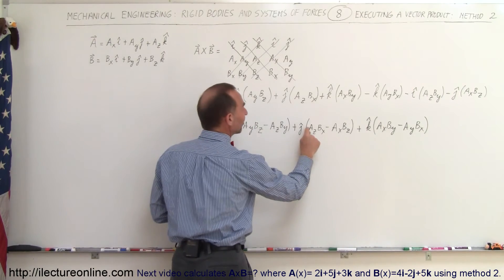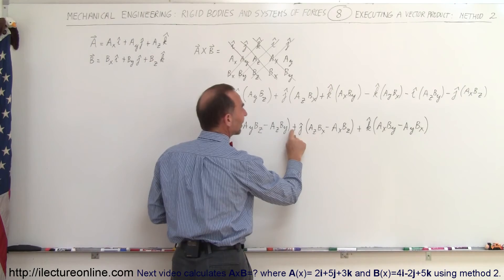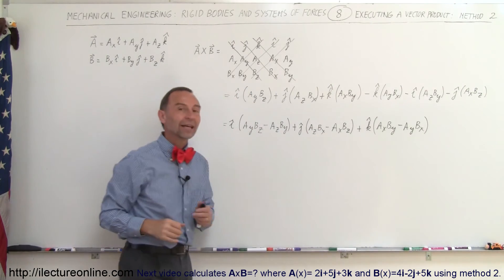So if you make this negative and make that positive and put a negative there, you'll get the same as you got in method one.